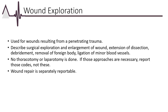Wound exploration codes relate to wounds resulting from penetrating trauma. These codes describe surgical exploration, enlargement of the wound, extension of dissection, debridement, removal of foreign body, ligation or coagulation of minor subcutaneous and/or muscular blood vessels of the subcutaneous tissue, muscle fascia, and/or muscle not requiring thoracotomy or laparotomy. If repair is done to major structures or major blood vessels requiring a thoracotomy or laparotomy, those specific codes would supersede the use of codes in the wound exploration section. To report the repair of wounds — simple, intermediate, or complex repair — use codes in the integumentary system section.